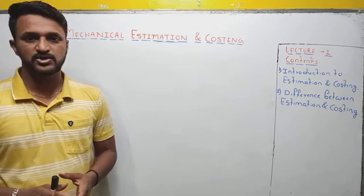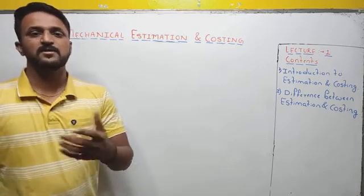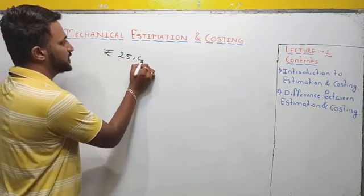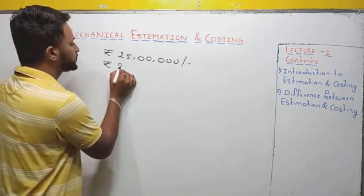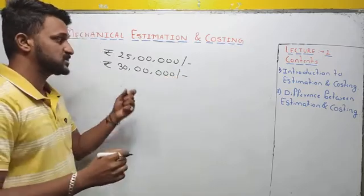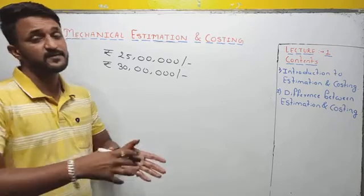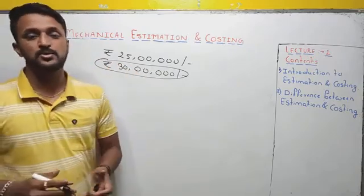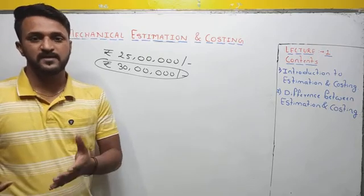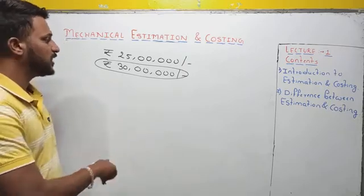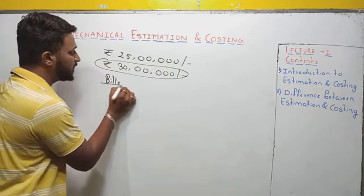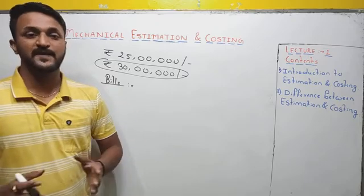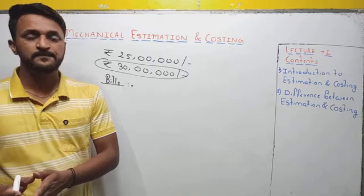Take the same civil engineering example. When the civil engineer starts constructing the home and finishes after maybe one or two years, he might have initially told you the work would be done at 25 lakhs. But after finishing, the cost has gone up to 30 lakhs. This five lakh difference is due to poor estimation and inexperience. How do you obtain this cost of 30 lakhs? When you add all the bills collected during construction — from different firms supplying materials — you get the actual cost of the building. That process of finding the actual cost is called costing.